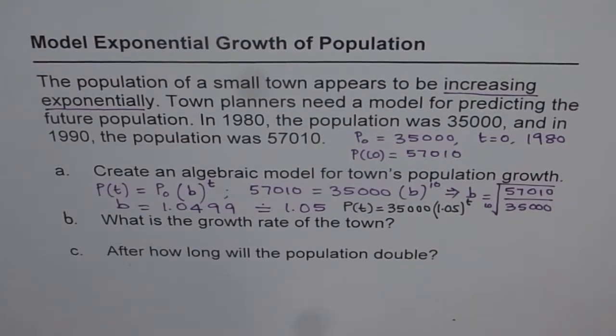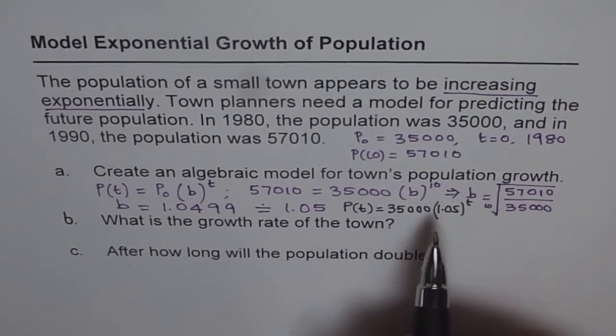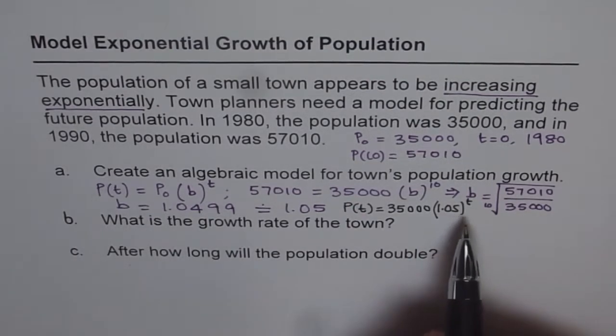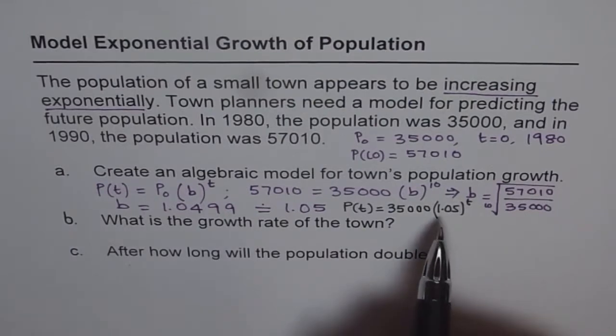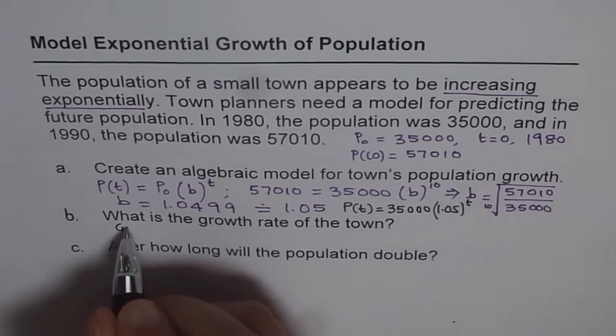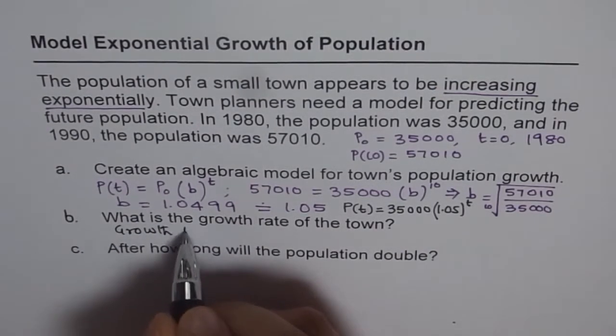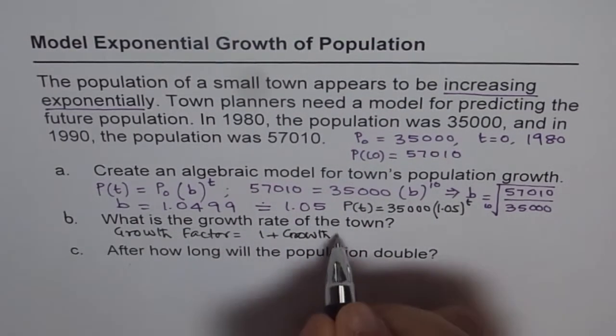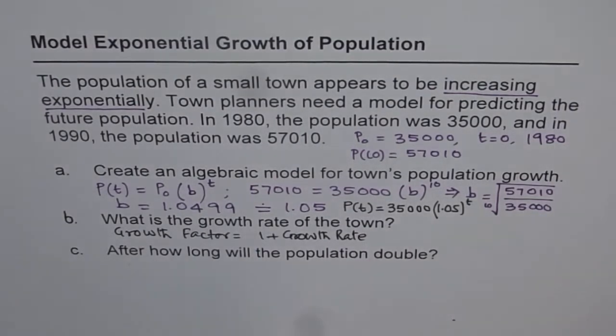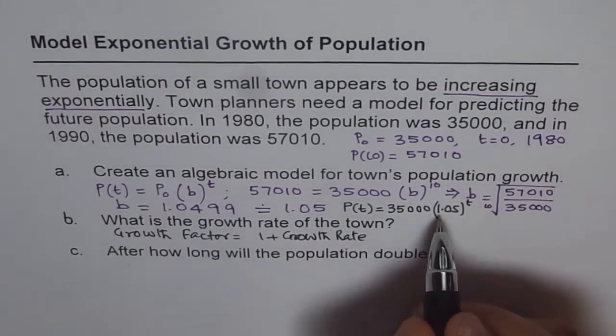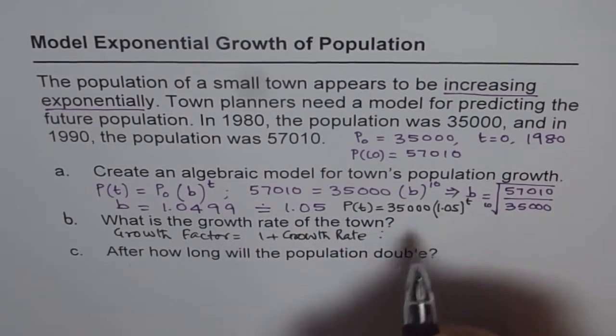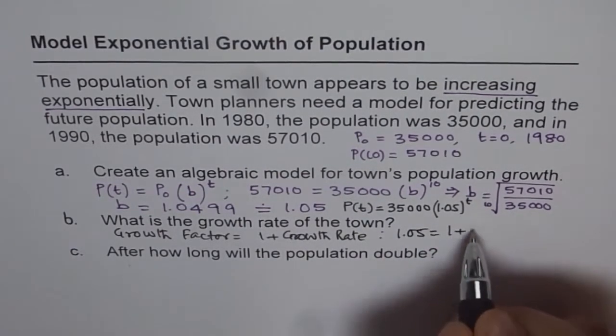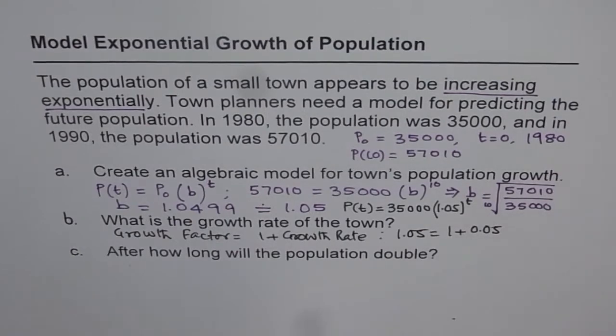Part B of this question is what is the growth rate of the town. Now growth rate and growth factor are two different things. Growth factor is something which you are always multiplying by for an exponential function. And growth rate is like 1 plus what. Growth factor equals to 1 plus growth rate. In case of decay it becomes decay factor and 1 minus decay rate.